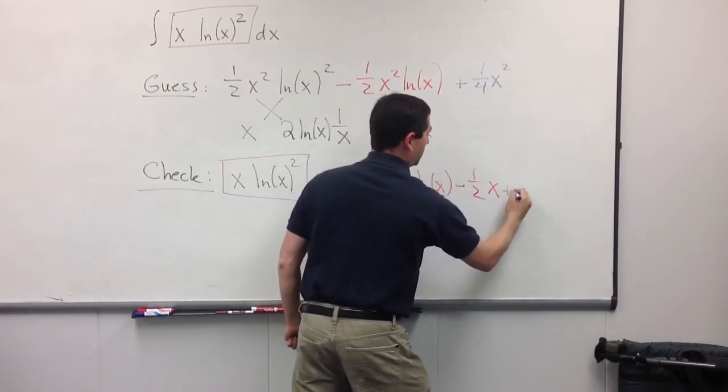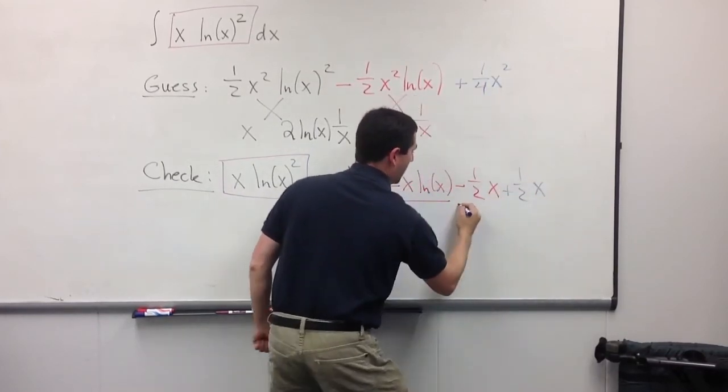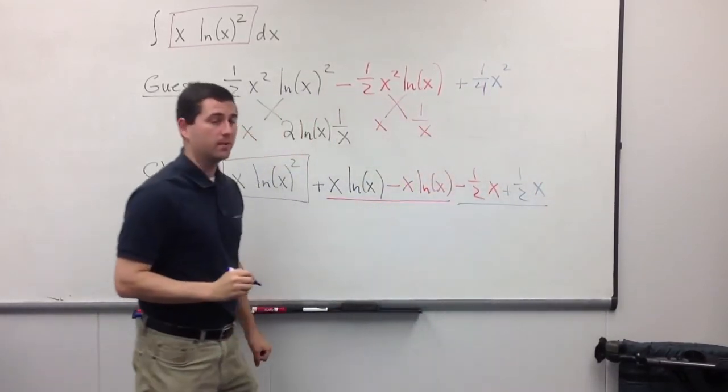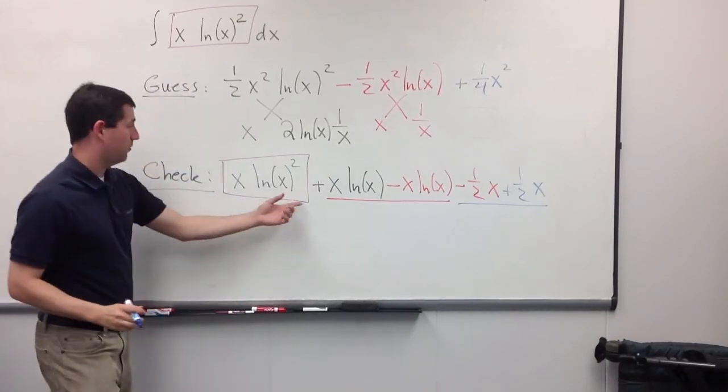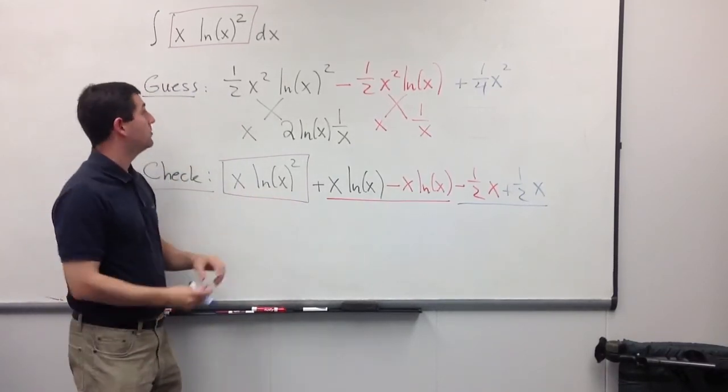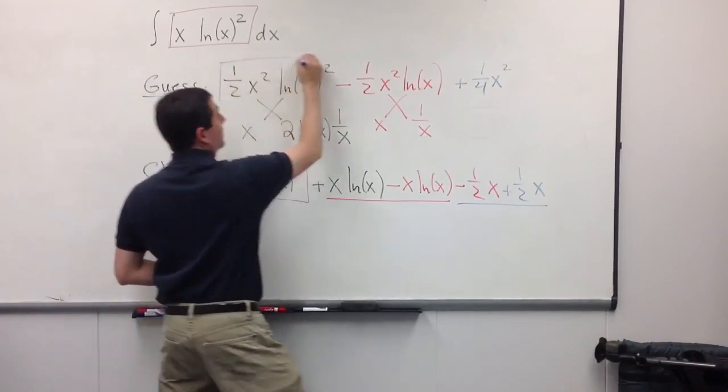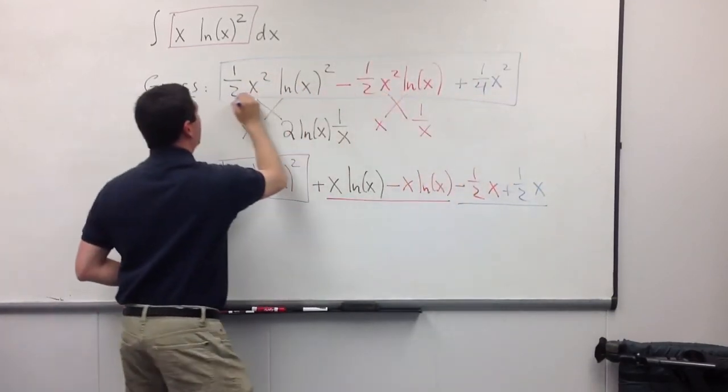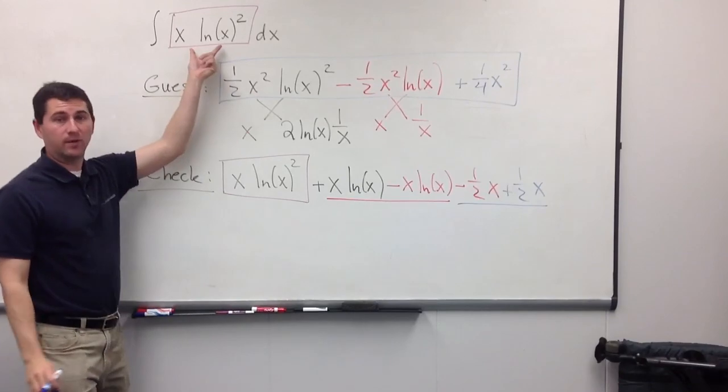So, if I take the derivative, it becomes plus a half x. Those two pieces of garbage go away. And so, I'm left with only the answer I want. Which means, this is an anti-derivative for my original function.